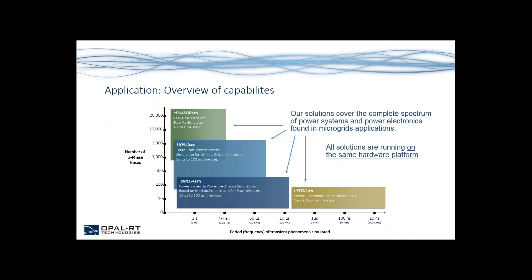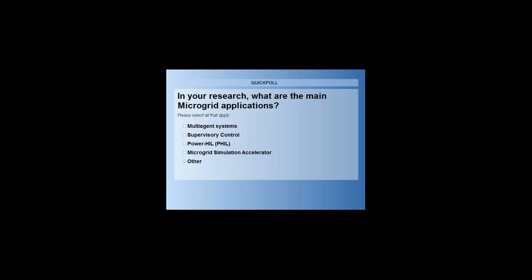Brief overview of our capabilities based on those applications: we have different solutions that allow you to cover the complete spectrum of power systems and power electronics found in microgrid applications. All those solutions run on the same hardware platform and can interact between themselves for co-simulation at various simulation time steps. We will now present the first poll. We have two polls during this presentation and would like your input on the following question: in your research, what are the main microgrid applications? This is a multiple-choice question — you can select from multi-agent systems, supervisory control, power hardware-in-the-loop, microgrid simulation accelerator, or other.